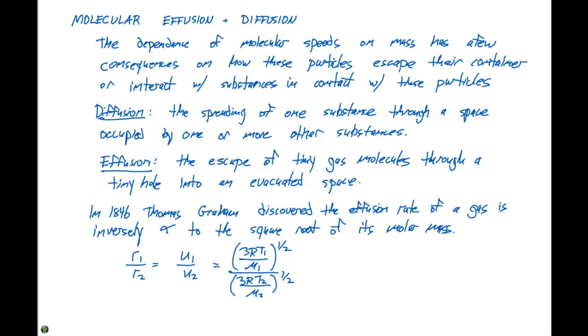If we rearrange this equation a little bit, we can say that R1 over R2, which is the rate of each of these gases, is gonna equal T1 times M2 divided by T2 times M1, all to the 1/2 power.